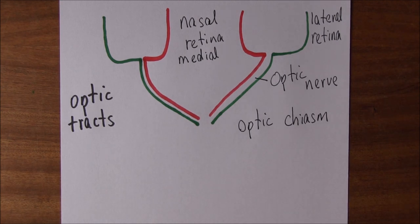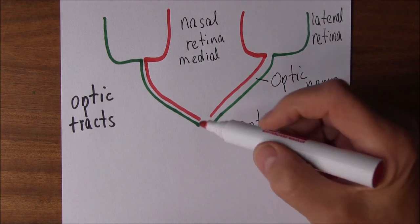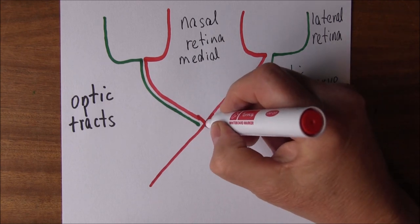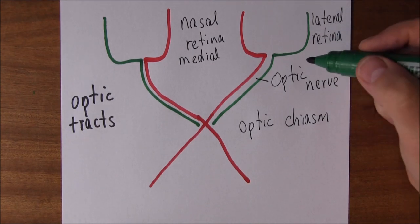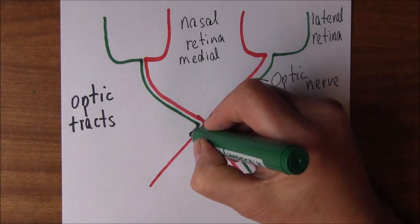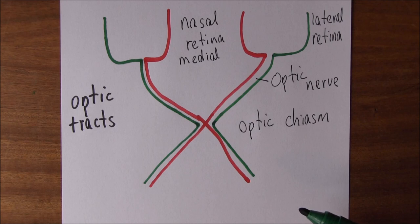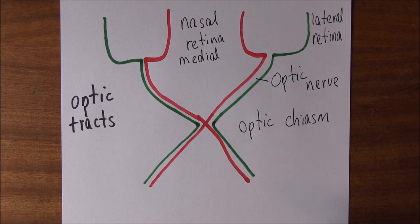What happens next is particularly interesting. The fibers — the axons carrying information from the nasal retina — actually cross over to the opposite side of the brain, whereas the ones from the lateral or temporal retina stay on the same side. Decussation means the crossing over, so we get decussation of the nasal retinal fibers, but we don't get decussation of the lateral or temporal retinal fibers.